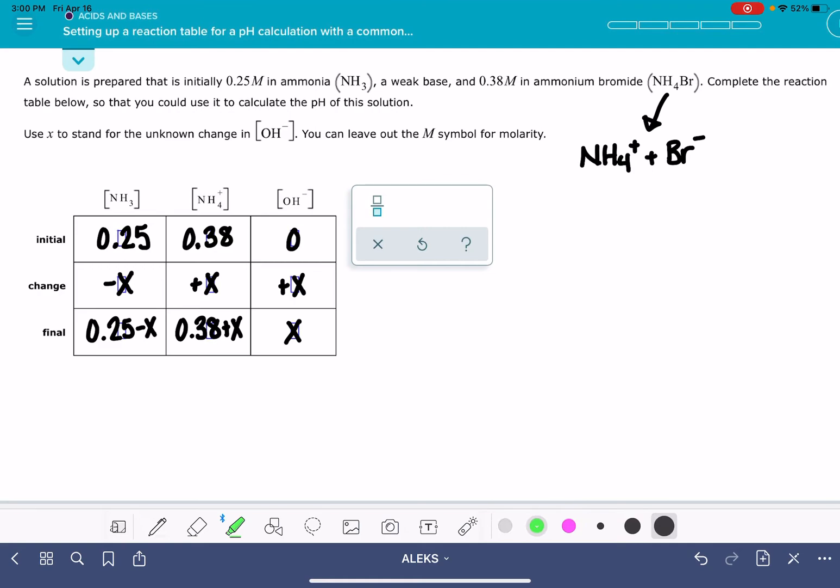And the last thing that you should do before you click Submit is just double-check to make sure that what you have done here is consistent with what Alex is asking you to do. So it says here that I should be using x to stand for the unknown change in hydroxide. So I just want to make sure that I'm using the correct symbol here, using x to represent the change in hydroxide. If it wants something a little bit different than what you've actually entered in this box, just modify accordingly.